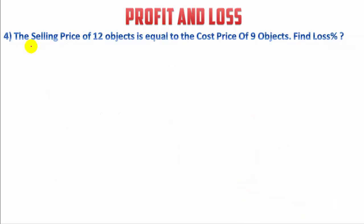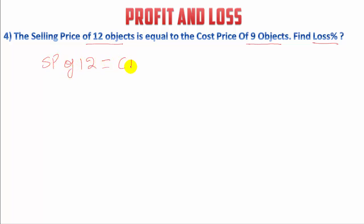The fourth question: the selling price of 12 objects is equal to the cost price of 9 objects and we have to find the loss percentage. It is given that the selling price of 12 objects is equal to the cost price of 9 objects. There is a formula for loss percentage.